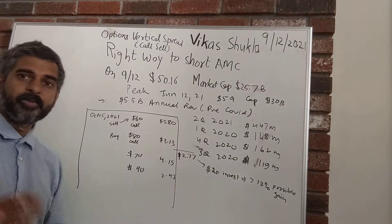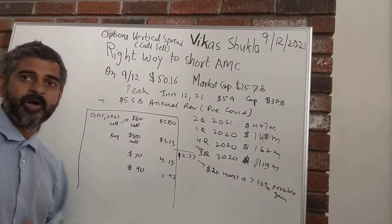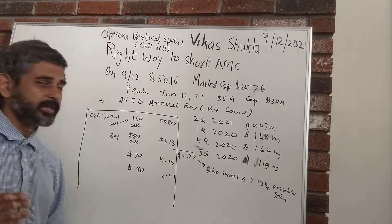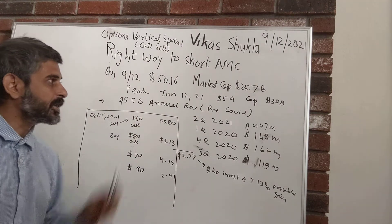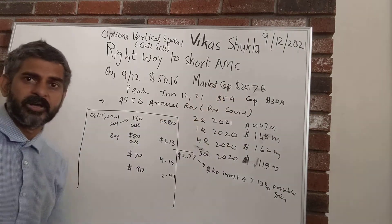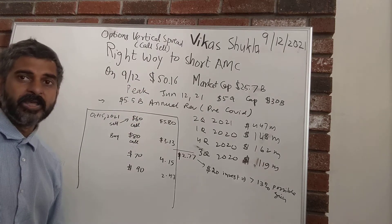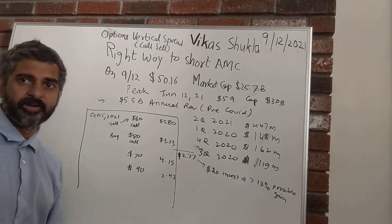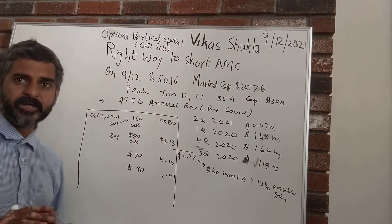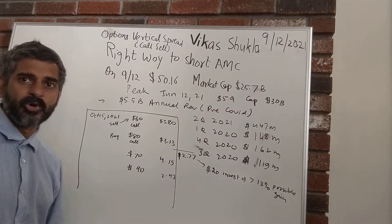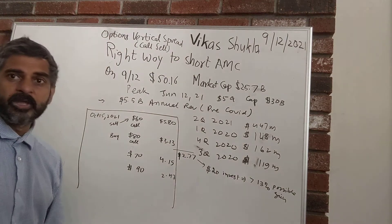Looking back before the pre-pandemic era, AMC had annual revenue close to $5.5 billion dollars. Based on that, its market capitalization could theoretically reach that kind of figure. However, the argument against it is that AMC is not a high-growth tech-like business — it's a brick-and-mortar business where revenue is going to be more or less constant, unless it uses its brand name to create some digital version.